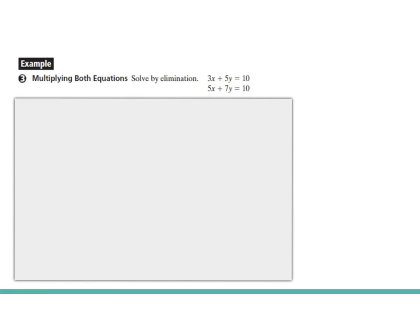Think of like LCDs. If you had an LCD fraction with a denominator of 3 and 5, what would your LCD be? Or if you had a denominator of 5 and 7, what would your LCD be? That's what you need to think about as you're trying to figure out what to multiply both of these equations by.